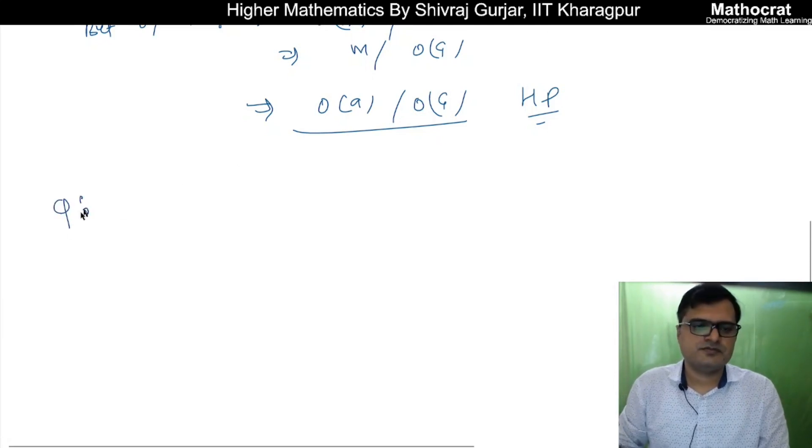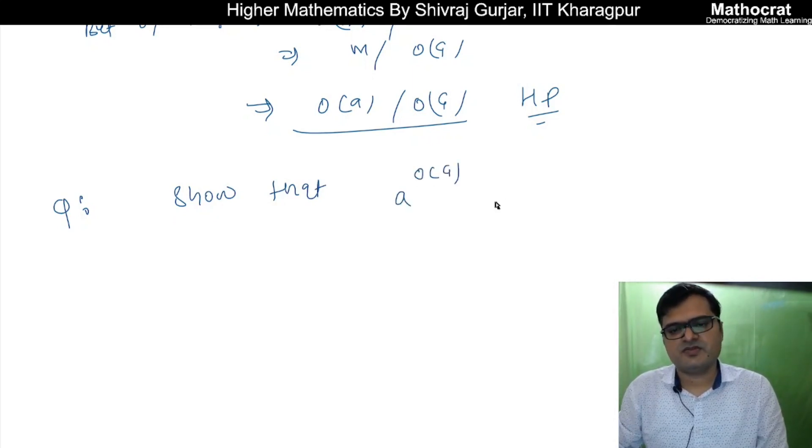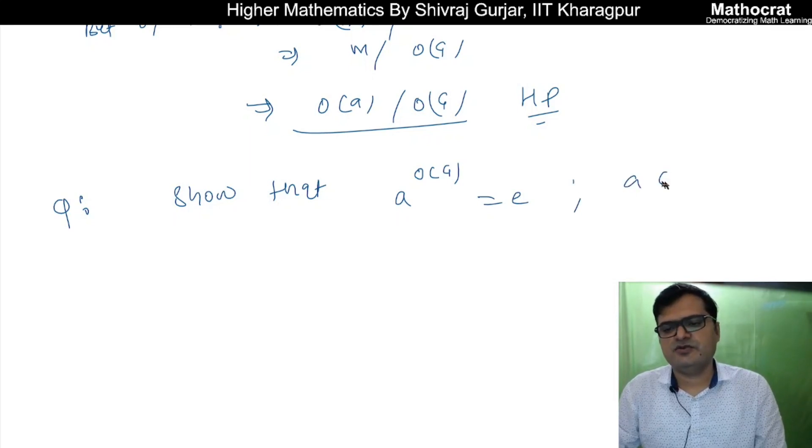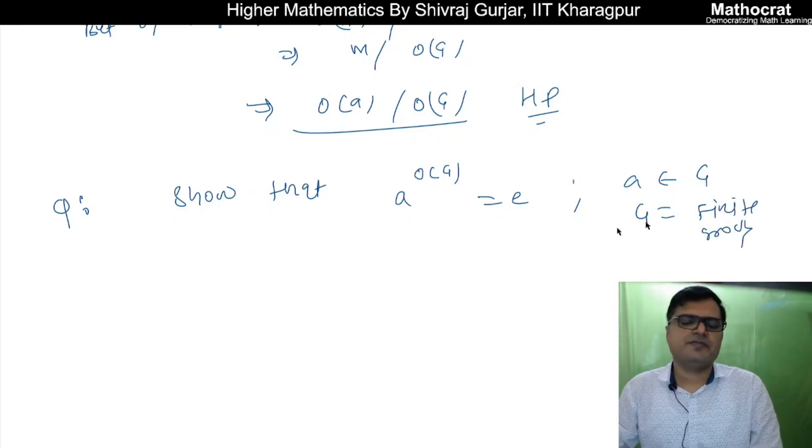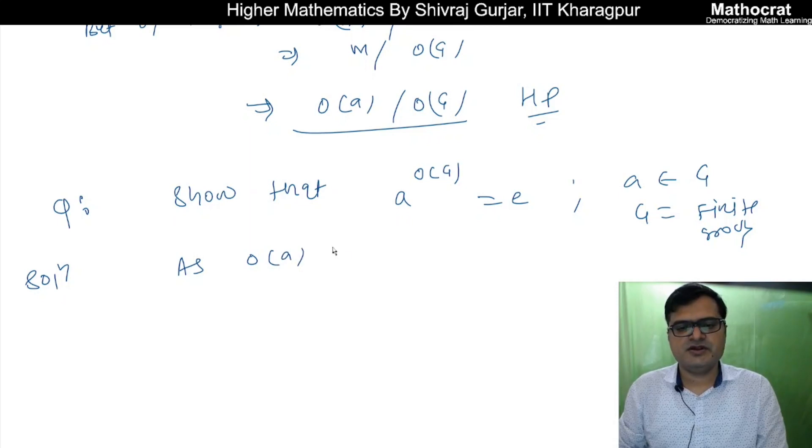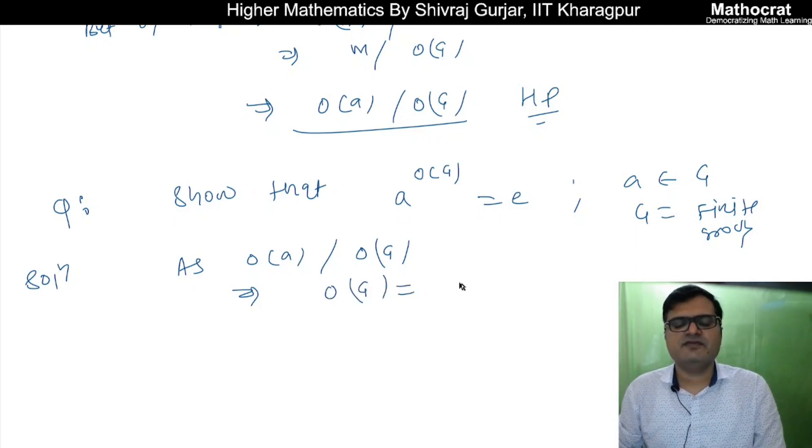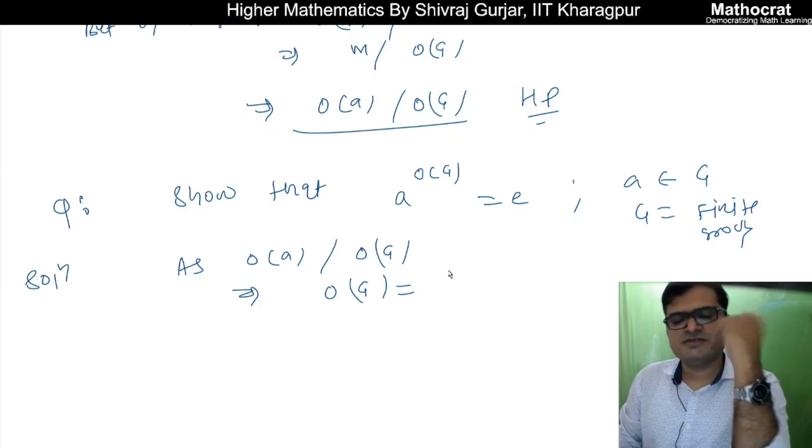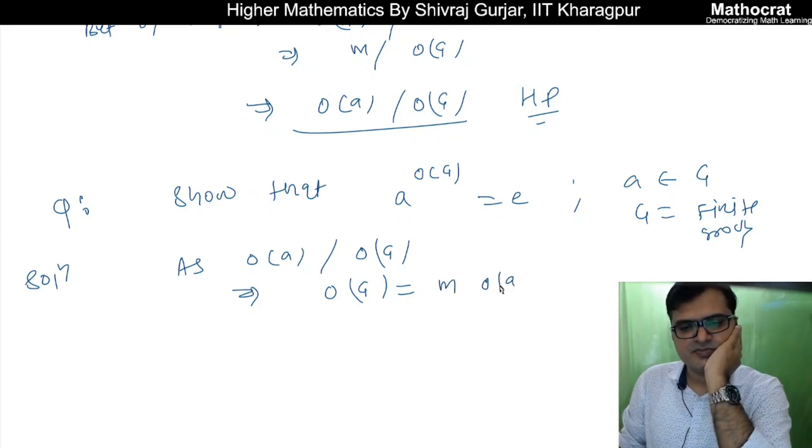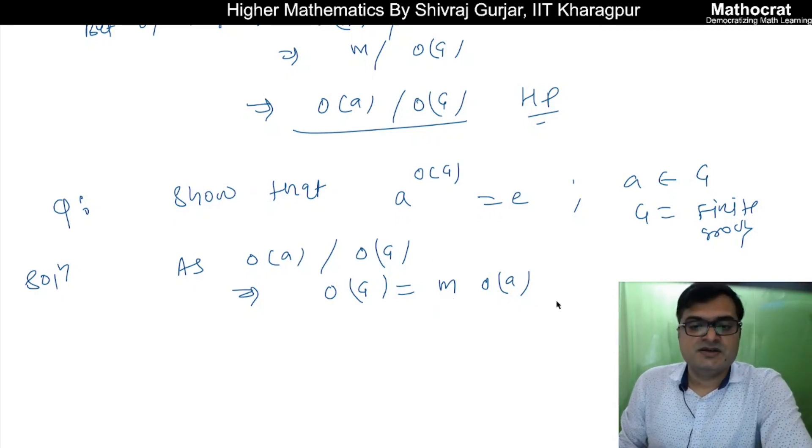A simple result is that a^(order of G) is equal to e, where a belongs to G and G is of course finite group. This is because order of a divides order of G.